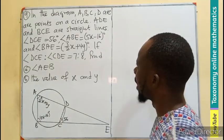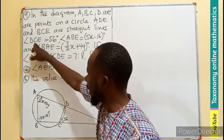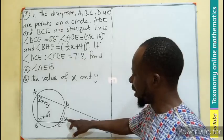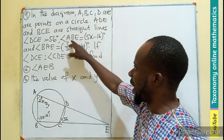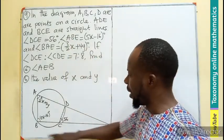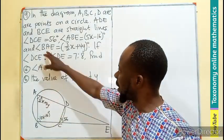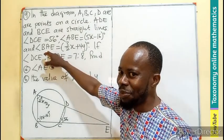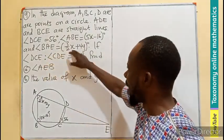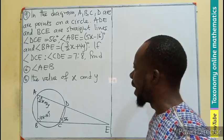The angle marked DCE is 56 degrees. The angle marked ABE is also given to us as 5x minus 16. The angle DAE is marked as 3/2x plus 4y.